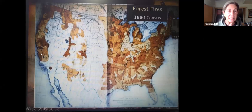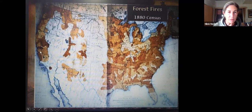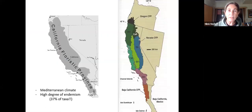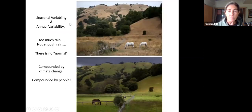This really old map from 1880 was a fire census. Look at our area — Central California, the Santa Lucia range — darker indicated more fires within a particular time frame. Look at how dark our Santa Lucia range is: lots of fires. Plants in our area are adapted — the California Floristic Province — to Mediterranean climates: summertime drought, wintertime wet. Summertime is when we tend to get fires when plants dry out, and there's also annual variability like this year where we're not getting a lot of rain.